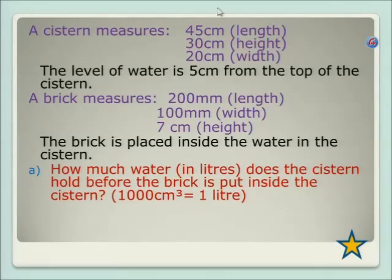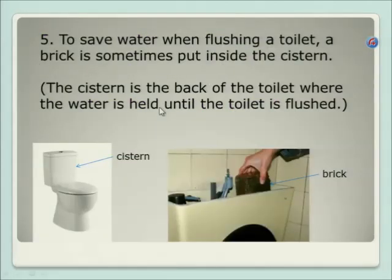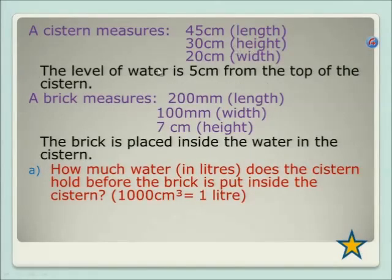The cistern — that's the back where the water goes in — is 45 centimetres long, the height from top to bottom is 30 centimetres, and the width is 20 centimetres. So it's 45 across, the height is 30, and the depth is 20. Now a little trick in this question is that the water level doesn't go right to the top — it's 5 centimetres from the top of the cistern. Keep that in mind.